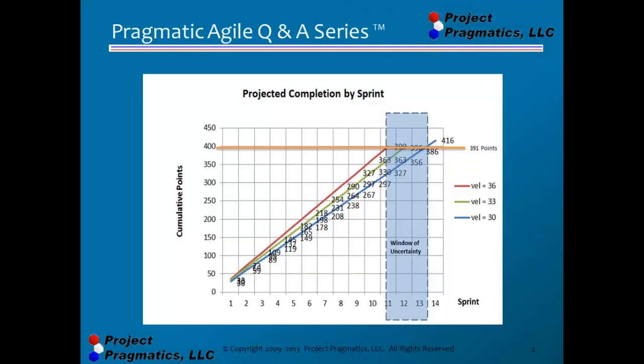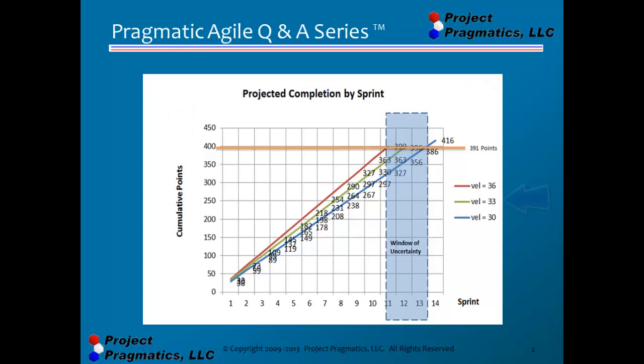Here you see a plot of cumulative points. This is the total number of points in the product backlog, reaching up to its maximum — in this case, 391 points. You see three velocities. At the time this chart was made, the velocity of the team was 33, and that was about sprint 3 or 4.